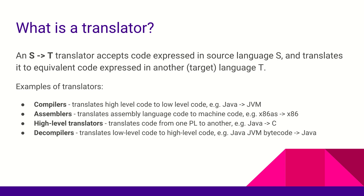Compilers convert high-level code to low-level code — for example, Java has both a compiler and an interpreter. Note that low-level code does not necessarily mean machine-level code, it could be, but it doesn't have to be. Assemblers convert assembly language code to machine code. If you've worked with 8085 or 8086 microprocessors, the module that converts your assembly language code to machine code is the assembler.